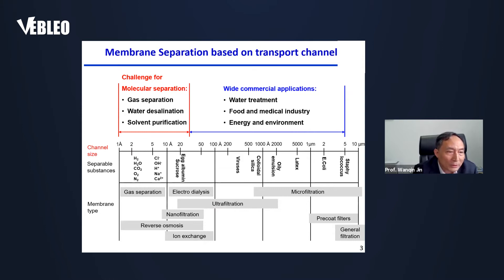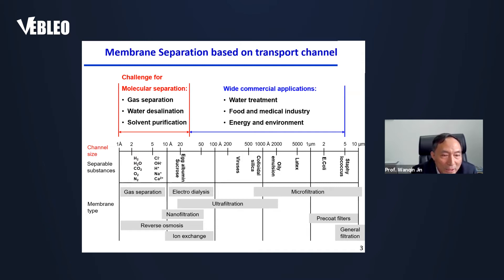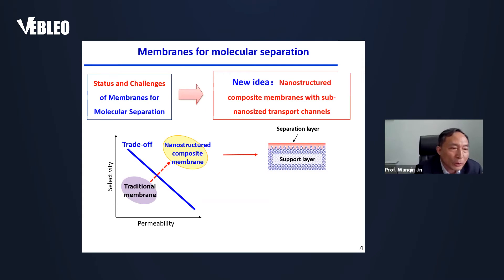Membrane separation is mainly based on the transport channels in the membrane, so channel size is critical. Microfiltration and ultrafiltration processes have been widely used in water treatment, food, medical industry, and environment. However, it's a great challenge to develop high-performance membranes with channel size generally less than one nanometer, which have important applications such as gas separation, water desalination, and solvent purification. For most traditional membranes for molecule separation, there is a trade-off effect between permeability and selectivity due to the disordered transport channels in the polymer.